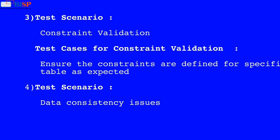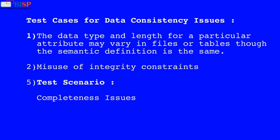Test Scenario 3: For constraint validation. Test cases for constraint validation: 7. Ensure the constraints are defined for a specific table as expected. Test Scenario 4: For data consistency issues. Test cases for data consistency issues: 1. The data type and length for a particular attribute may vary in files or tables, though the semantic definition is the same. 8. Misuse of integrity constraints.